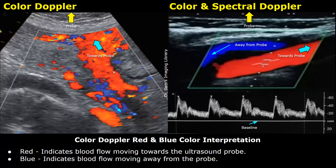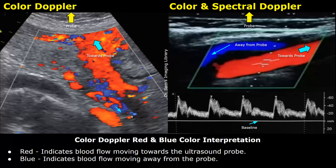In this image, blood is flowing in this direction in this area. Down here there are some blue areas — the blood in these vessels is moving away from the ultrasound probe, which is up here. So in this image, this blood is moving downwards, away from the probe.